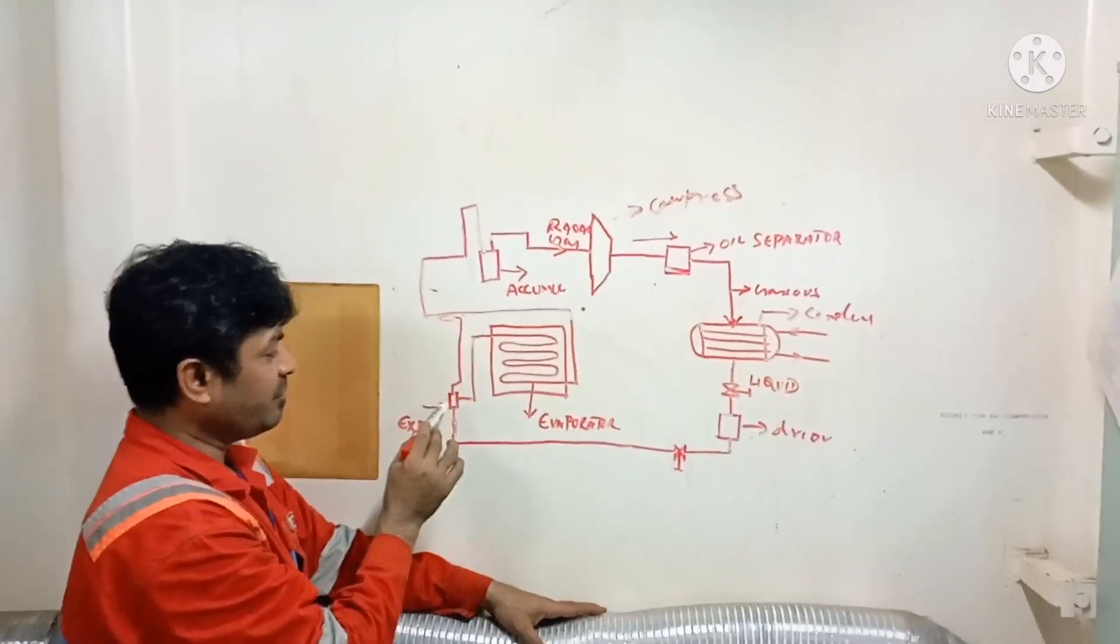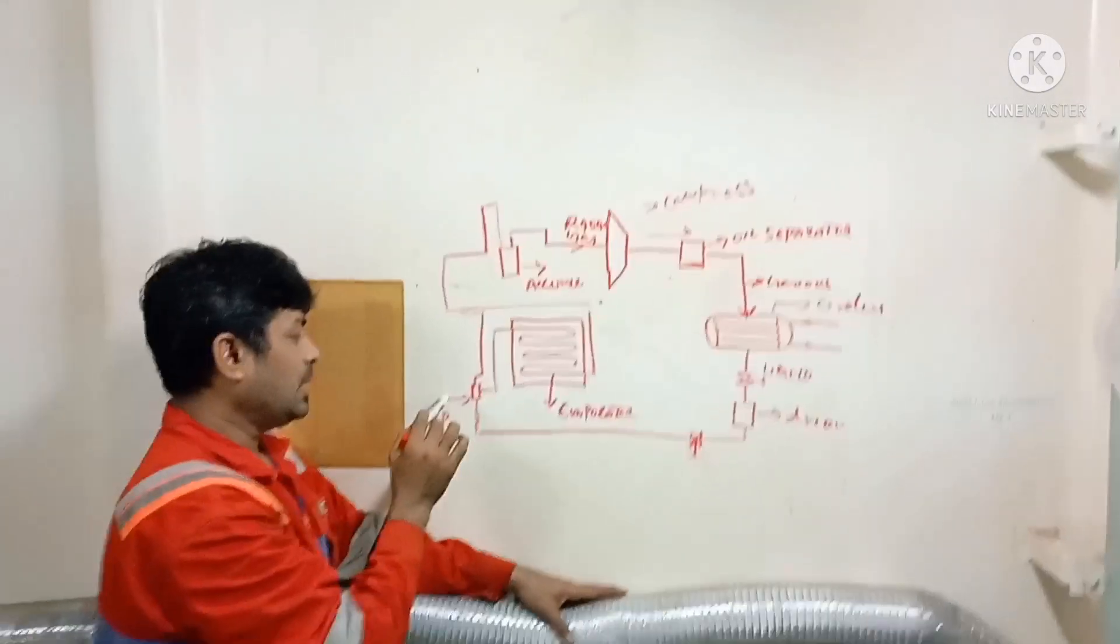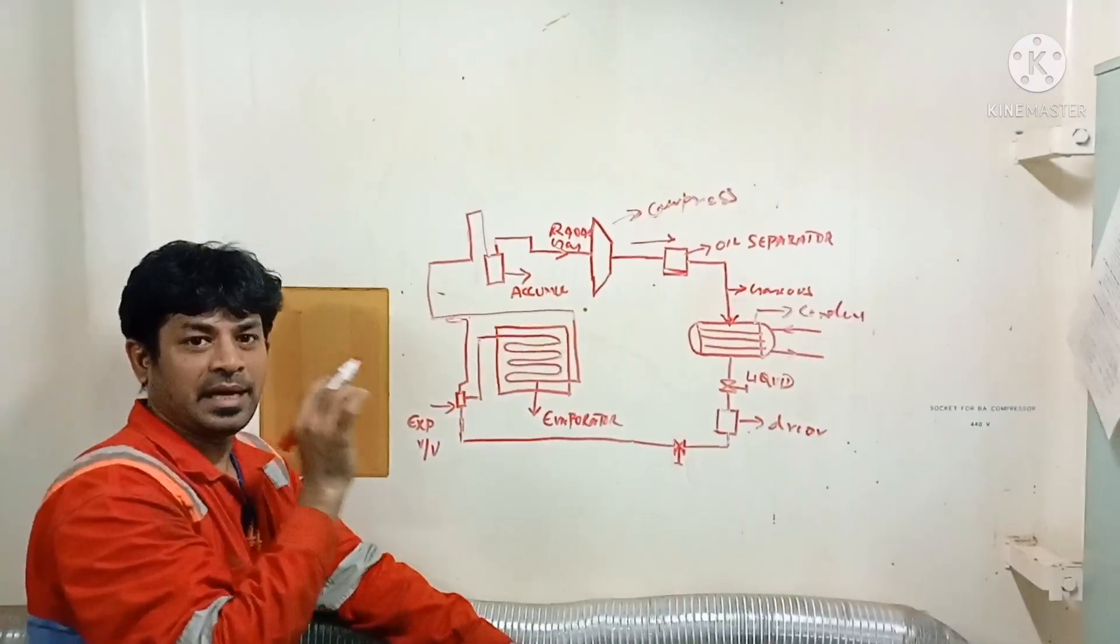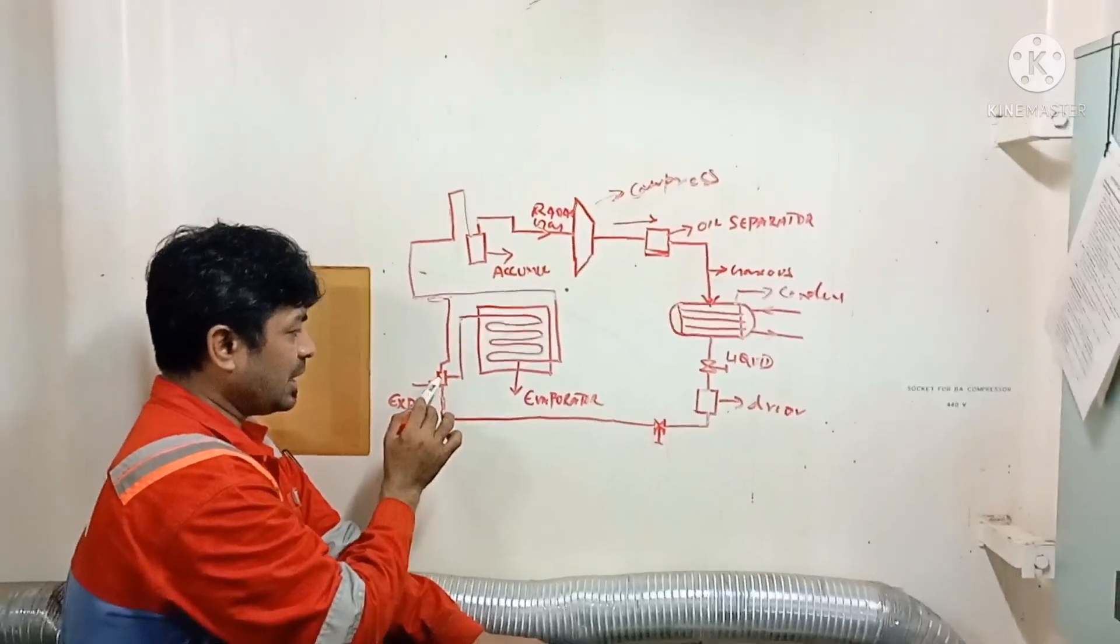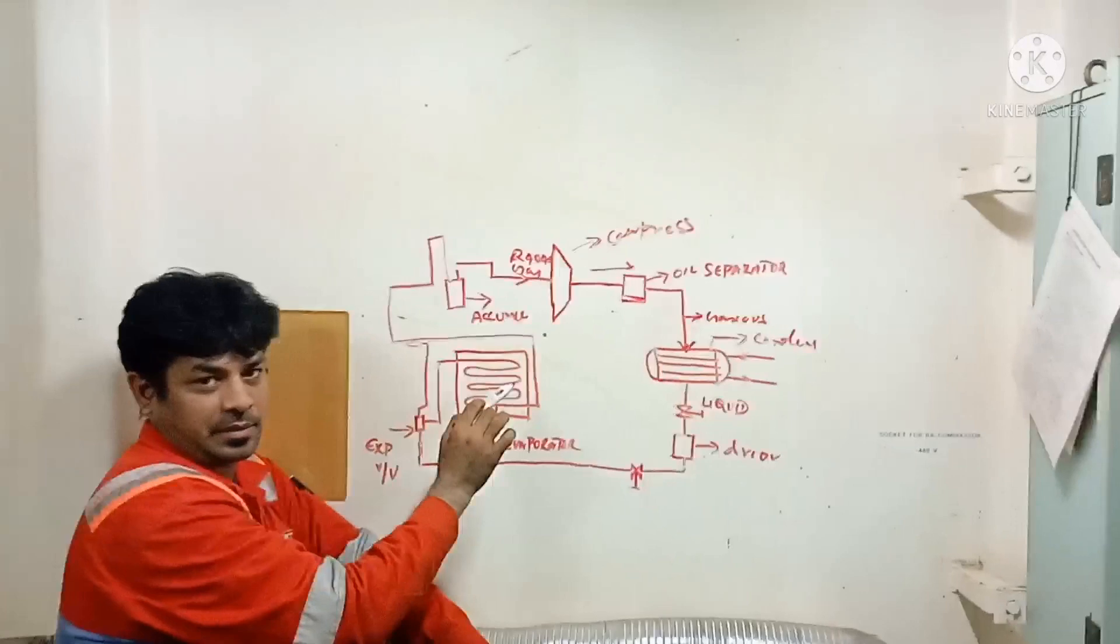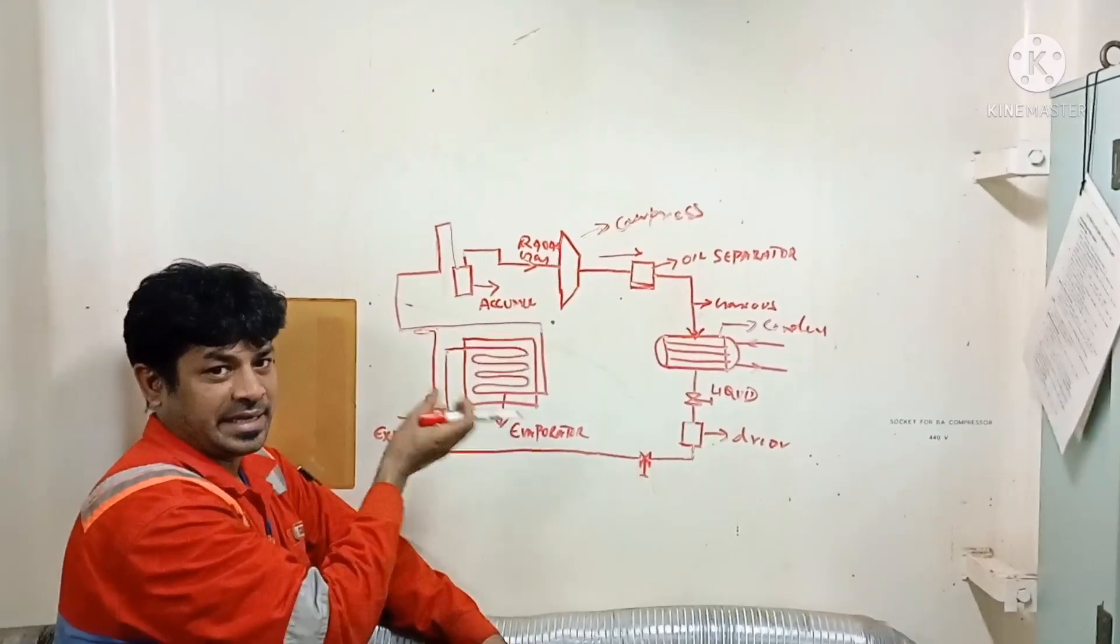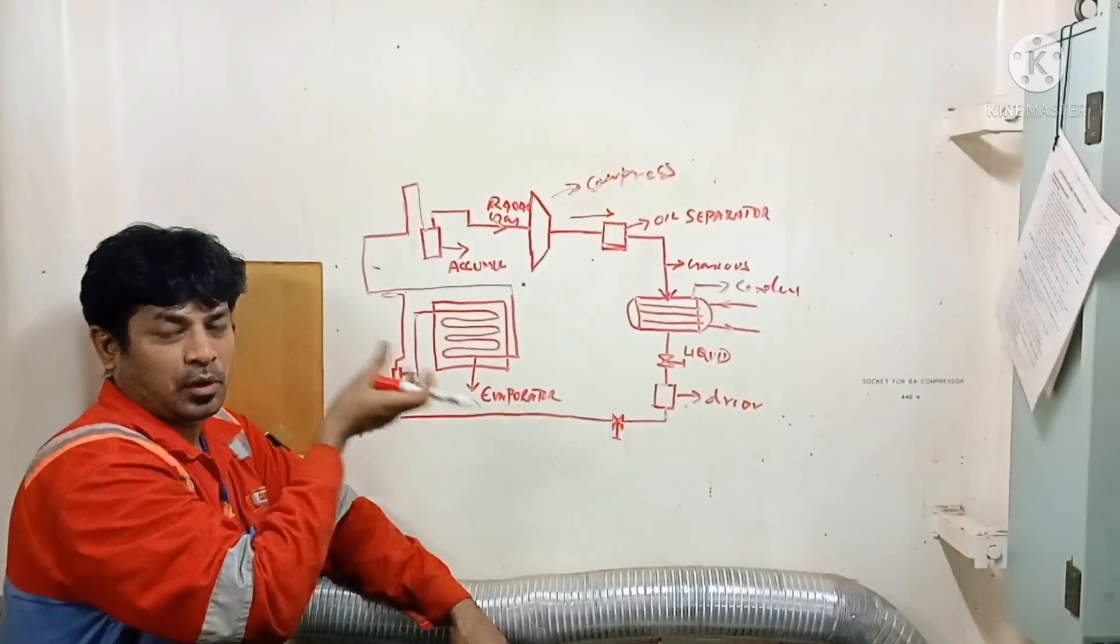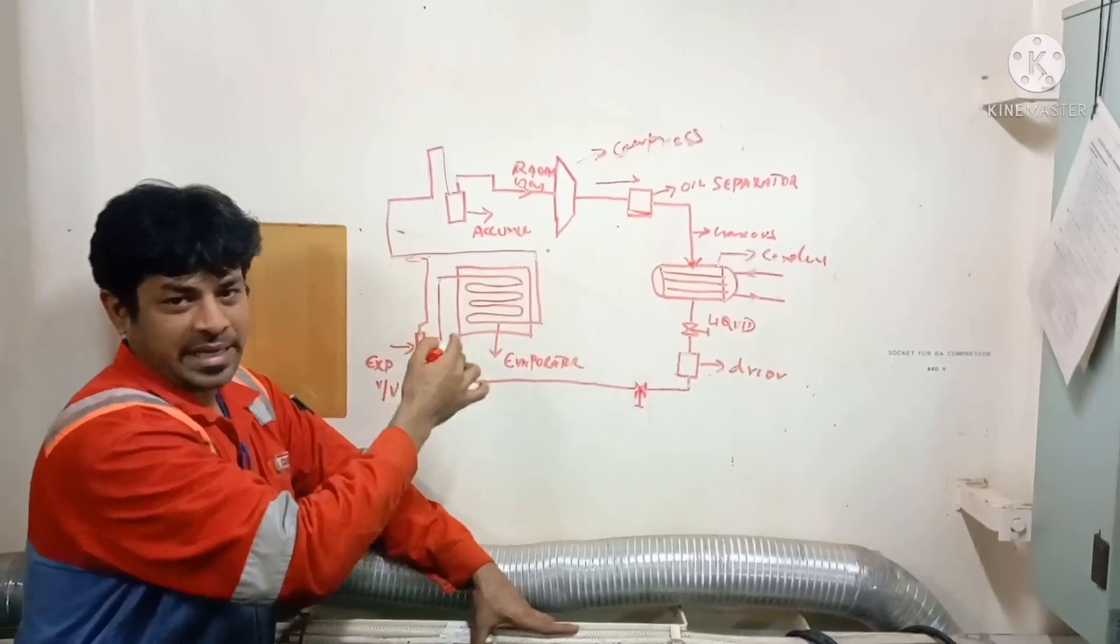From the expansion valve - the expansion valve function is to supply the gas, regulate the gas flow. The outlet of the expansion valve will go to the evaporator. Once it goes to the evaporator, it takes the heat, it removes the heat from whatever room - meat room, fish room, or vegetable room.